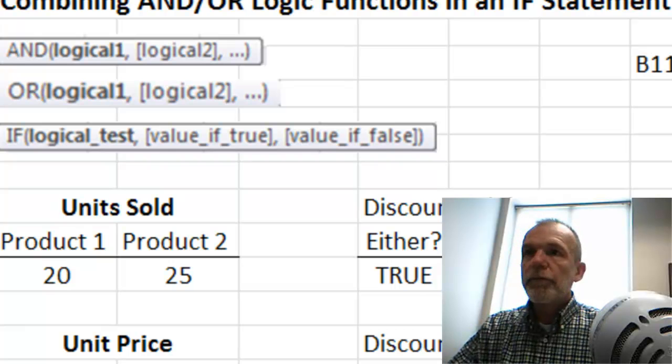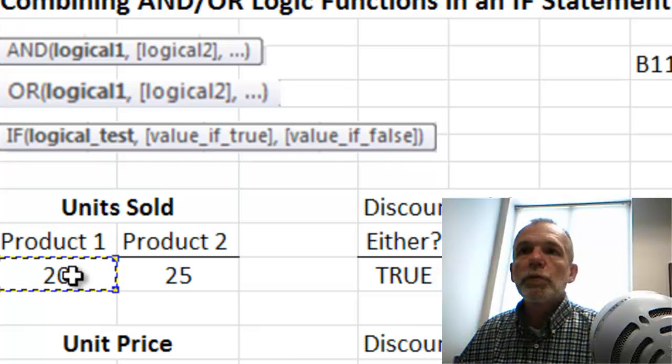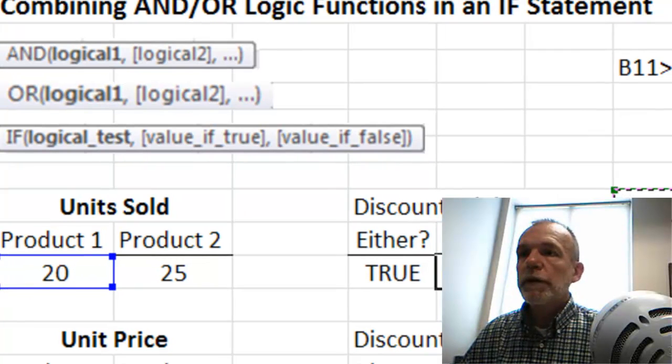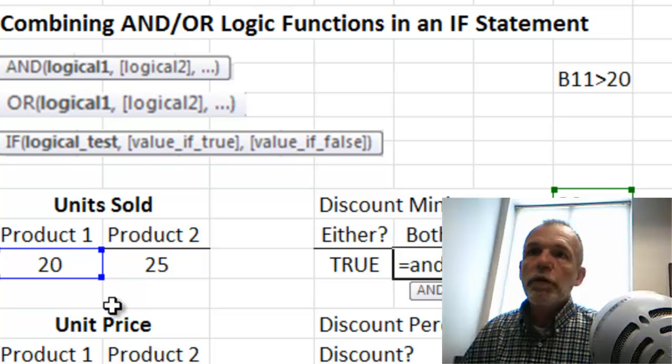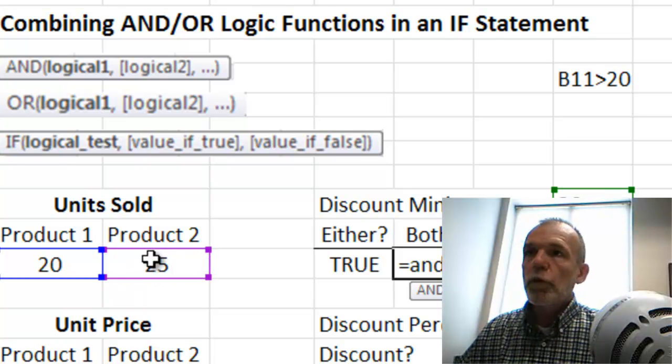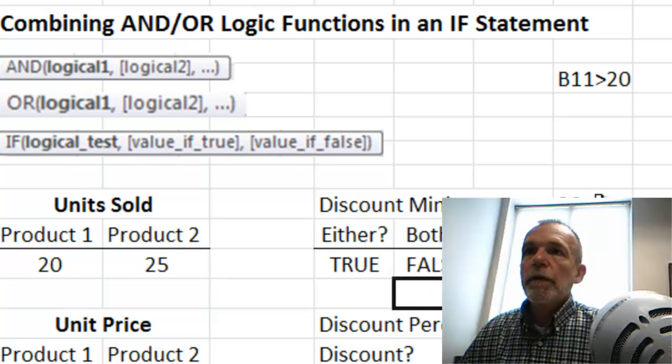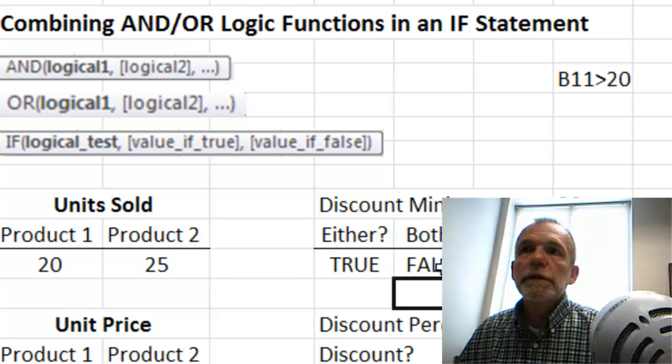Product 1 units sold more than 20, product 2 units sold more than 20, and that's returning a false.